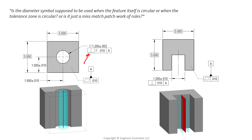The same sort of story can be found with perpendicularity, which controls orientation outside of location. When controlling a cylindrical feature perpendicular to datum A, we show a diameter symbol with a size of ten thousandths, so we know the tolerance zone is diametrically ten thousandths. And again, no diameter symbol when controlling two parallel planes, because we're controlling the mid-plane of a feature of size — just the same logic as with position, just showing different examples.